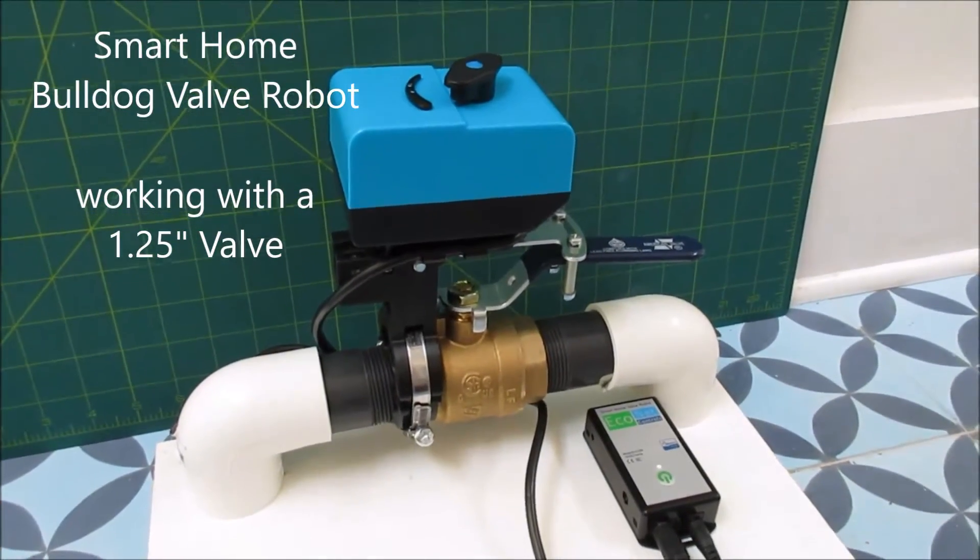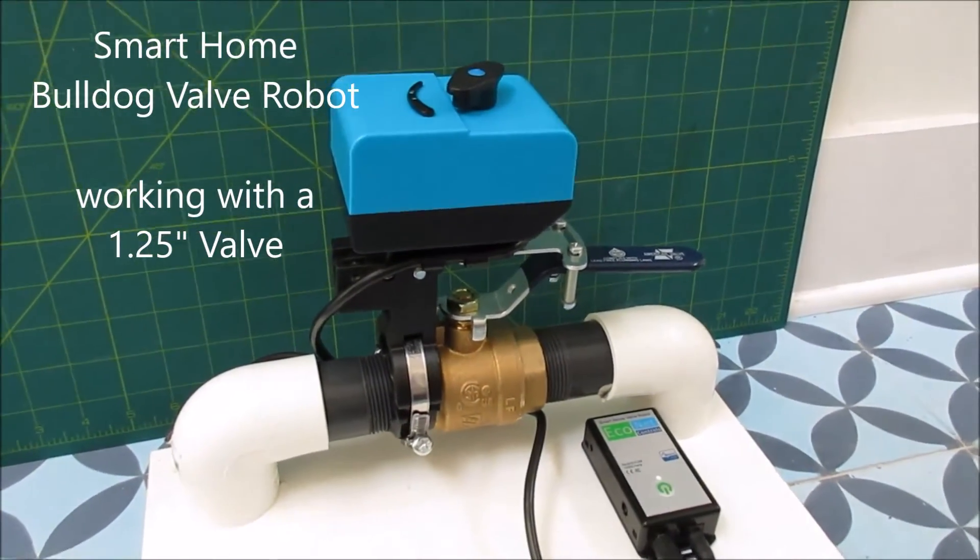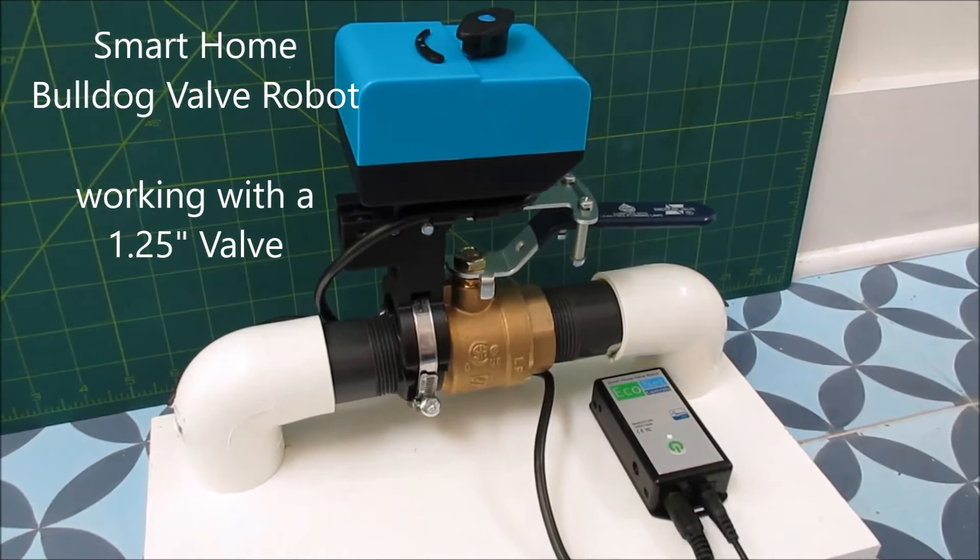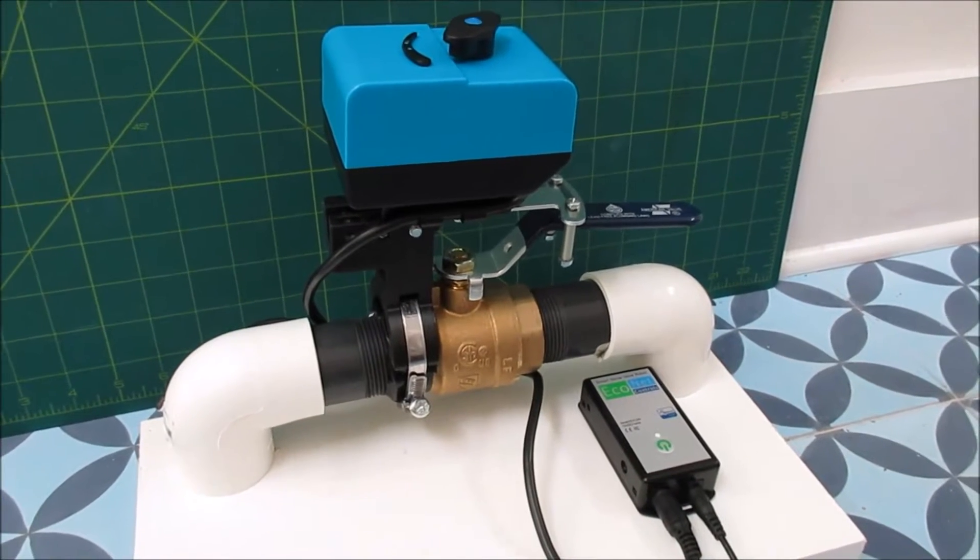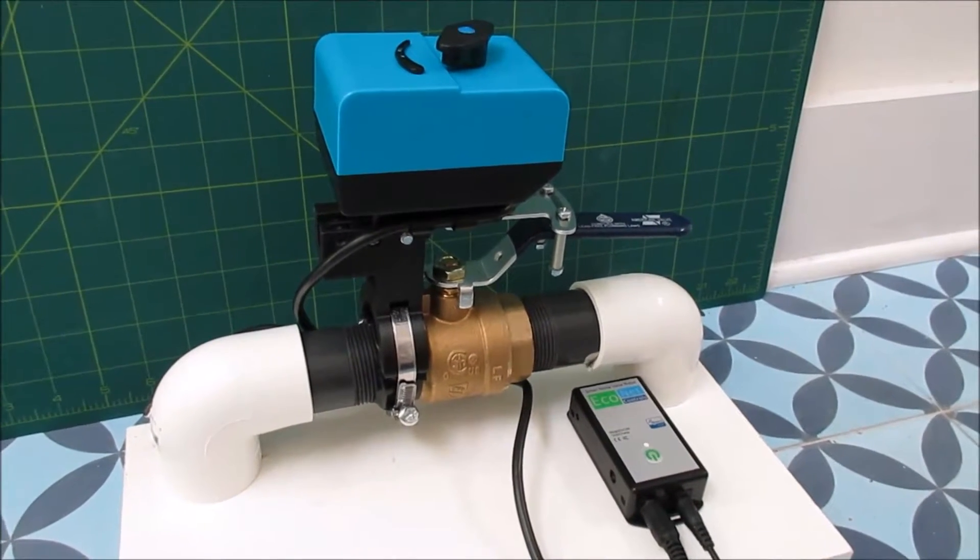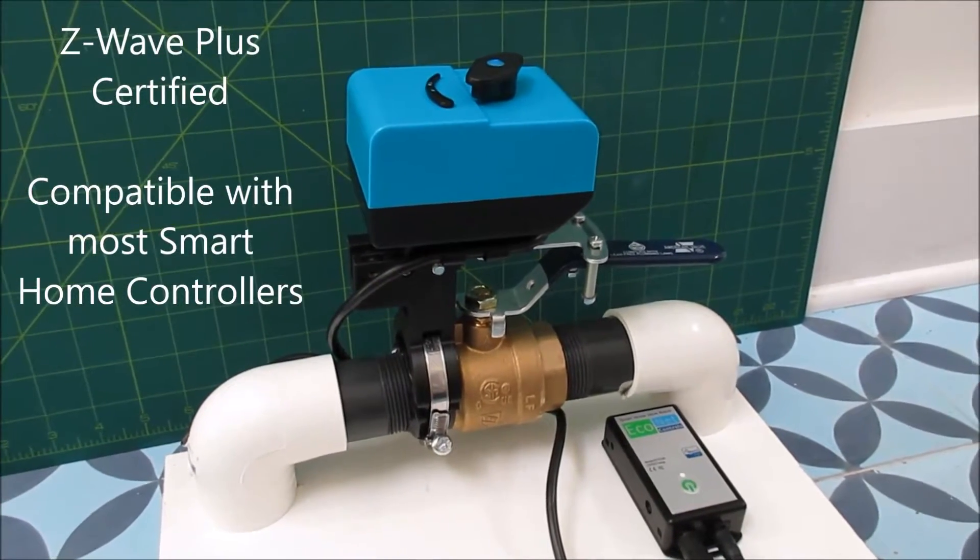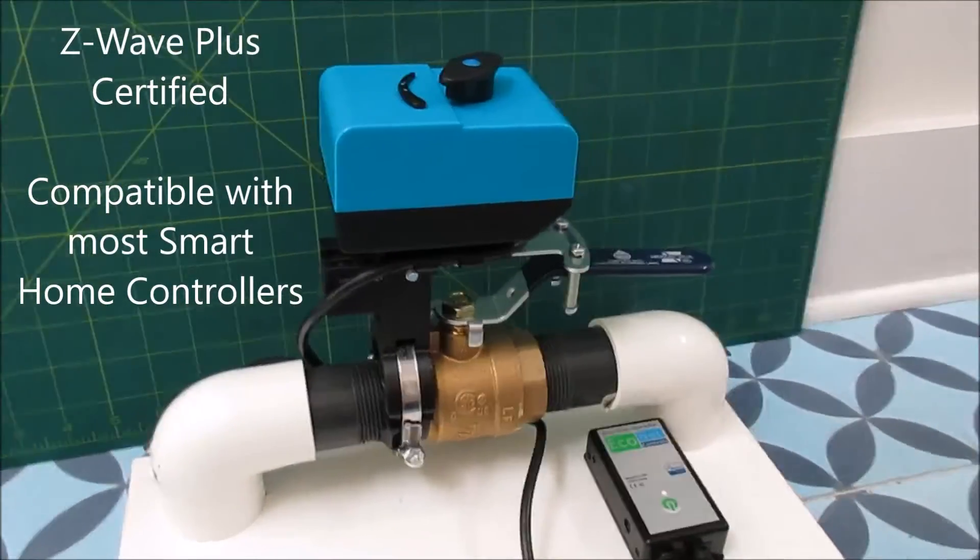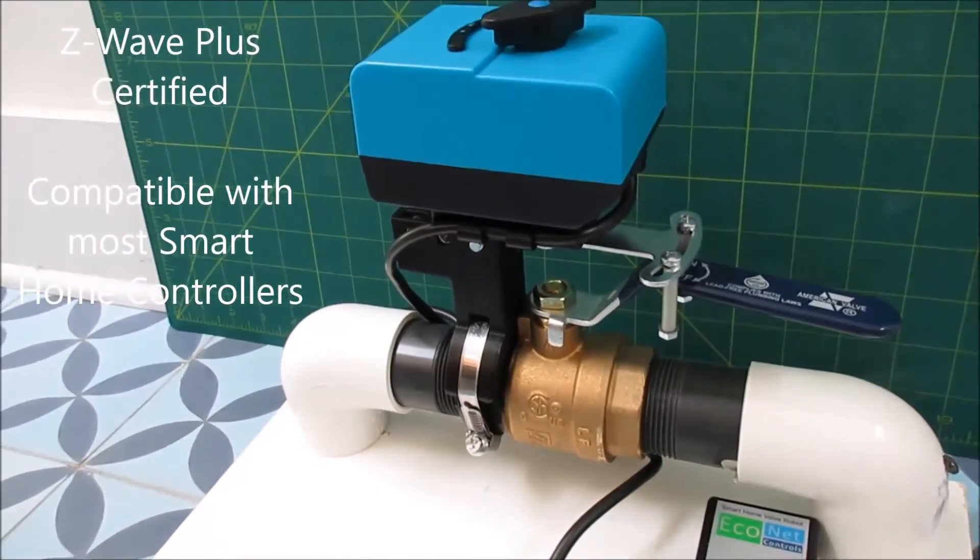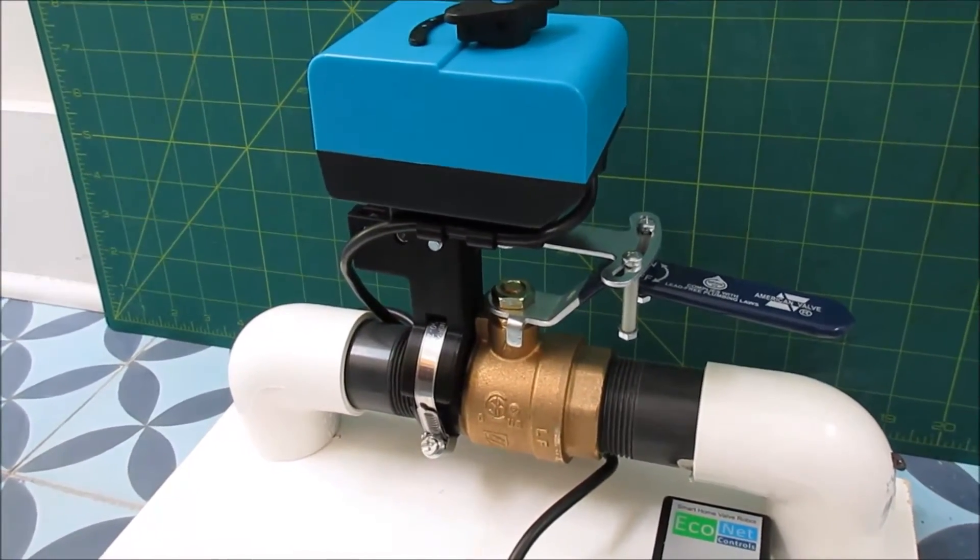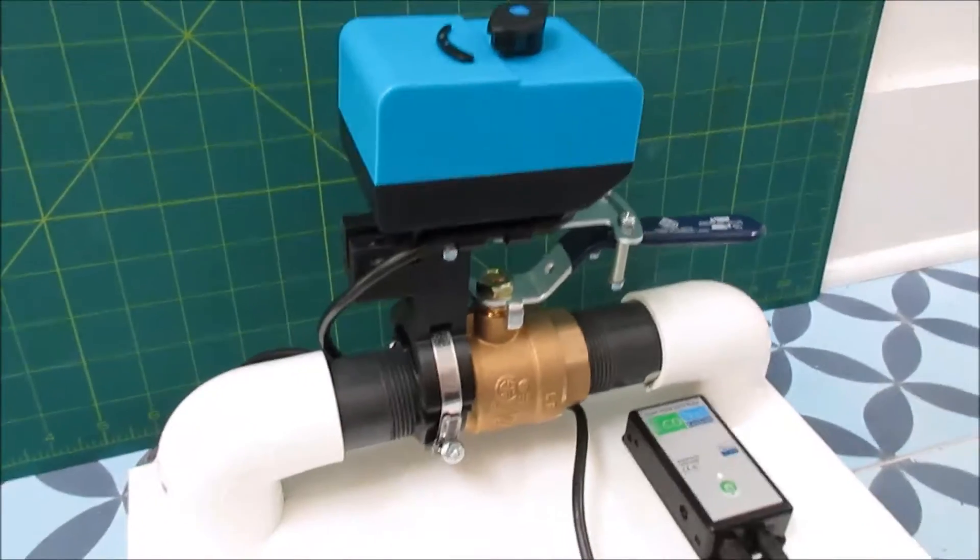This is a demonstration of the smart home bulldog valve robot working on a large and difficult one and a quarter inch ball valve. It's a Z-Wave Plus device compatible with most popular smart home controllers and some that aren't so popular.